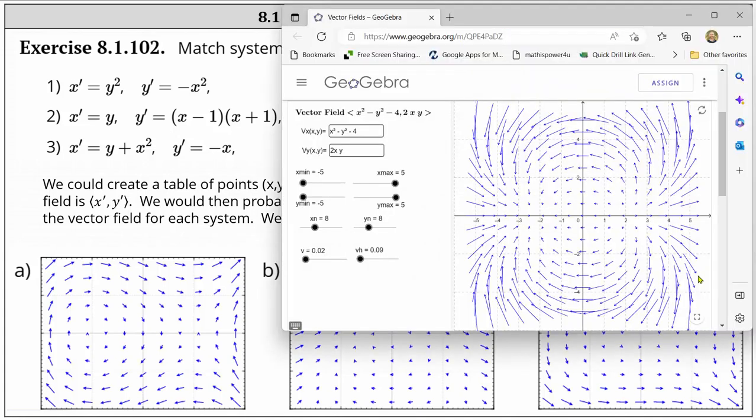So here's the website. By default, we have x prime equals x squared minus y squared minus four, and y prime equals 2xy. Notice x prime is given by vx of (x, y), and y prime is given by vy of (x, y). We can change the scaling on the coordinate plane by changing the x and y mins and maxes. xn and yn change the density of the slope field. v changes the scale factor, meaning the length of the vectors, and vh changes the arrow size. We'll adjust these as needed.